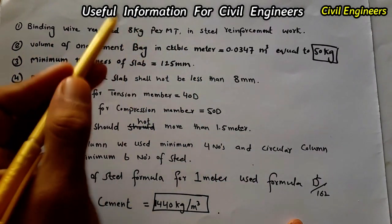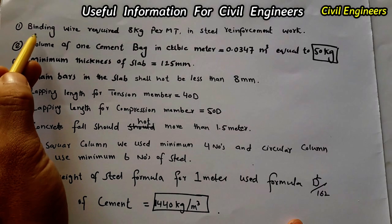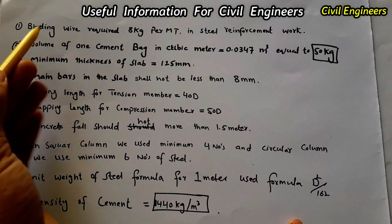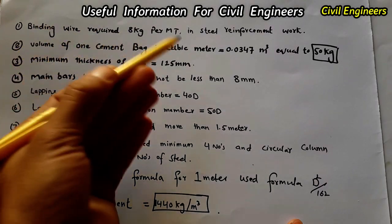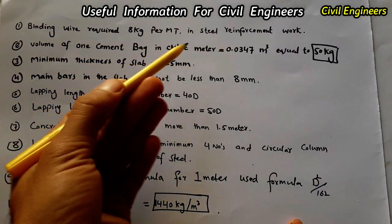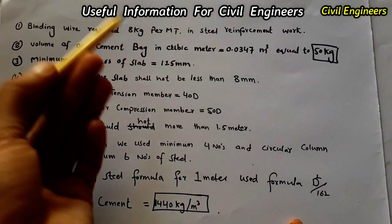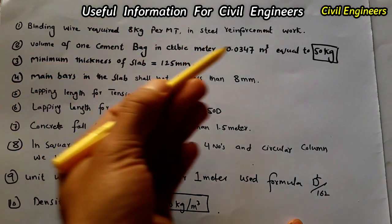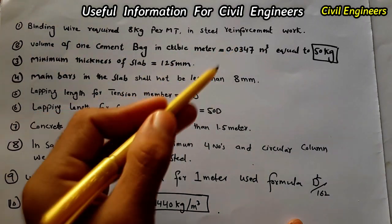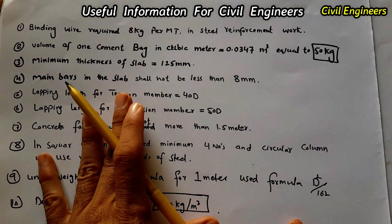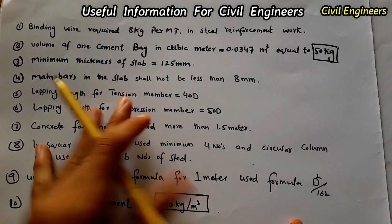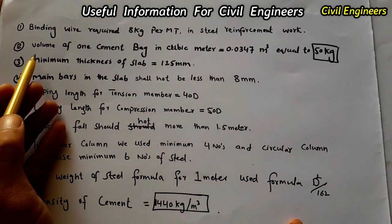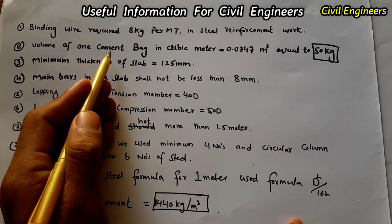MT means metric ton, which is 1000 kg or 1 ton. So 8 kg of binding wire is required for 1 ton of steel. This is the first piece of information.